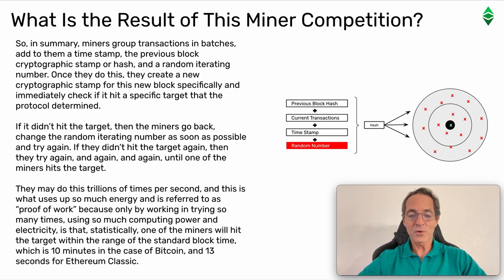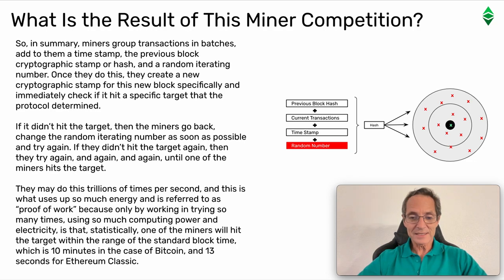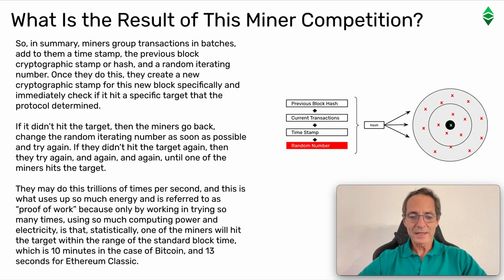They may do this trillions of times per second, and this is what uses up so much energy and is referred to as Proof-of-Work, because only by working and trying so many times using so much computing power and electricity is it that statistically one of the miners will hit the target within the range of the standard block time — which is 10 minutes in the case of Bitcoin and 13 seconds for Ethereum Classic.